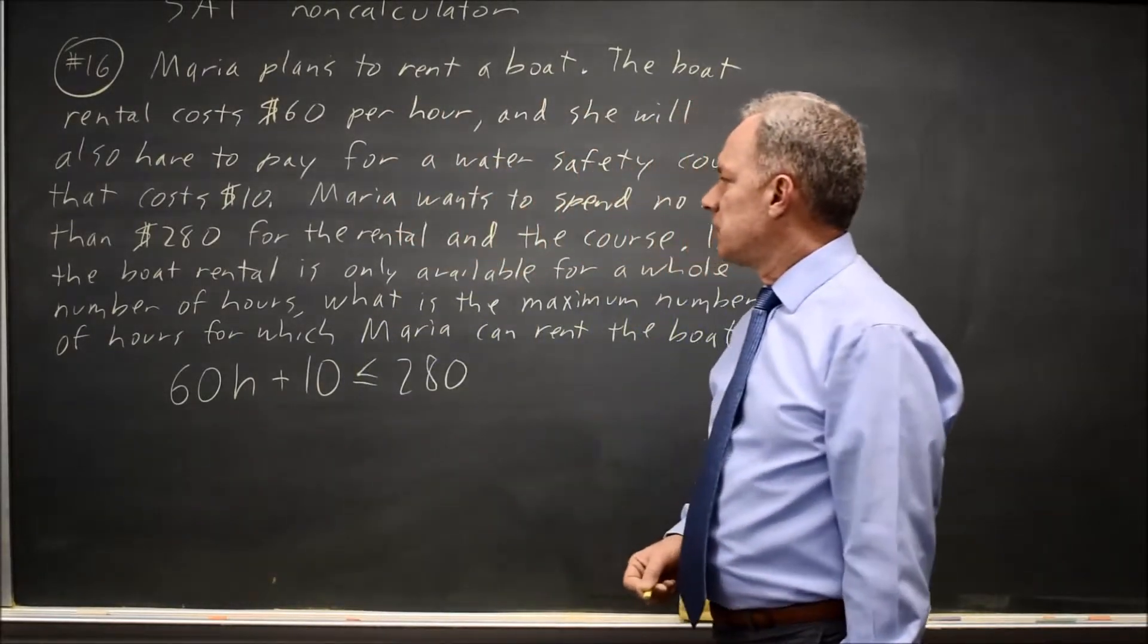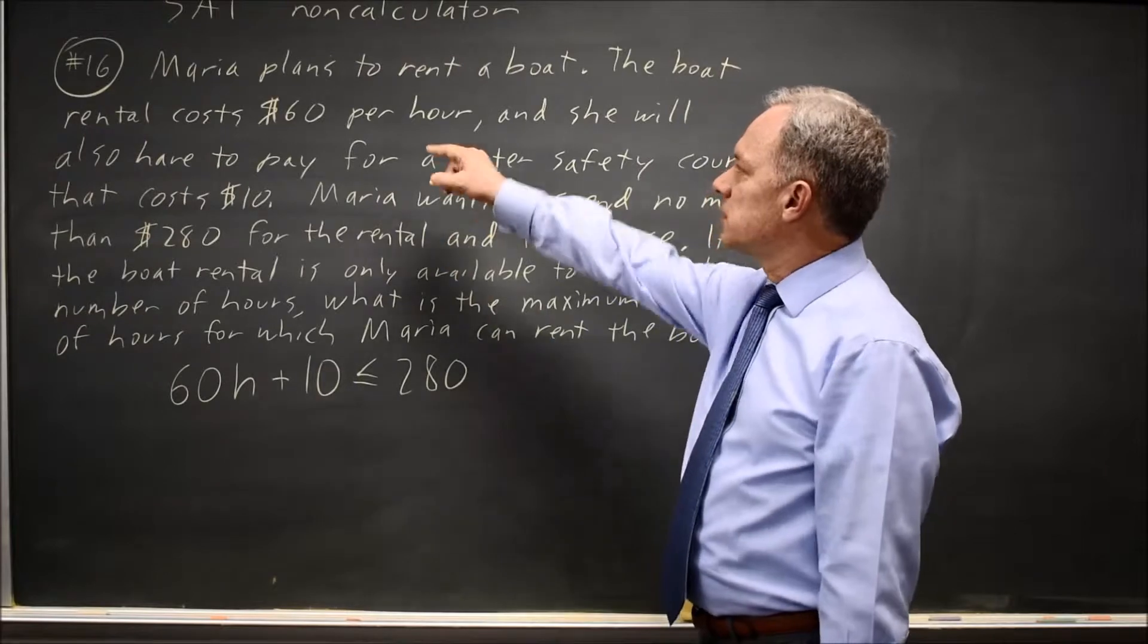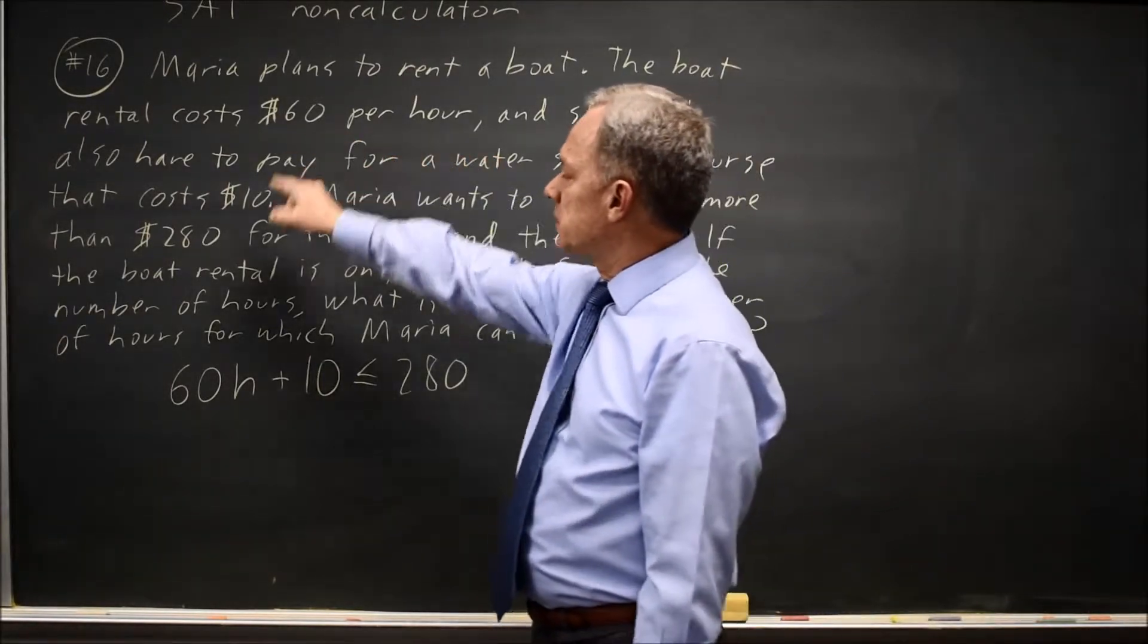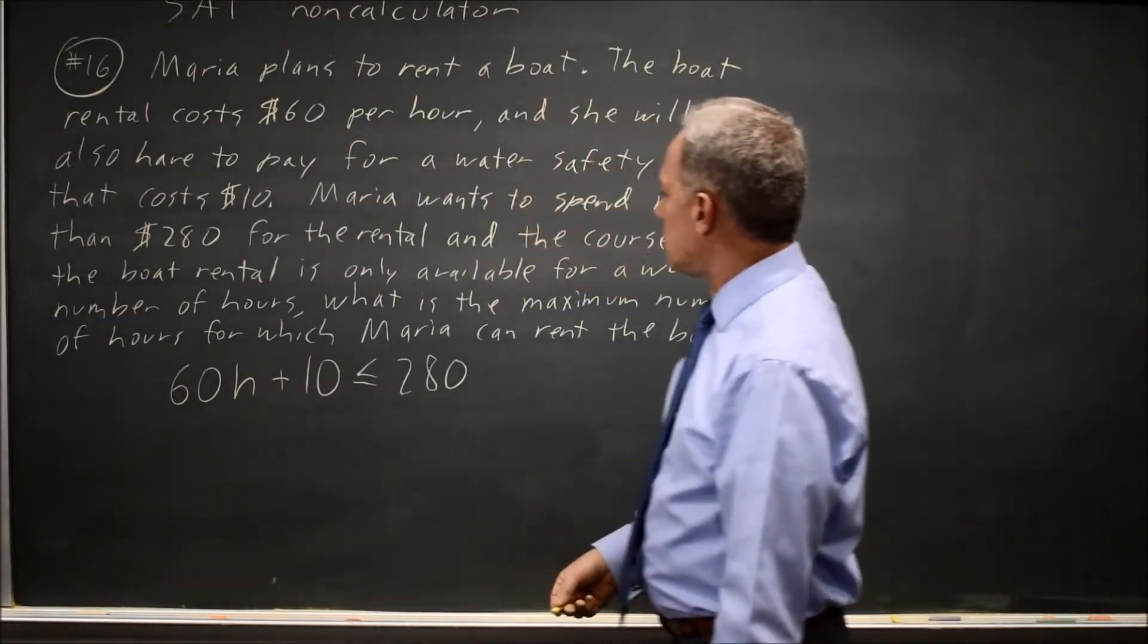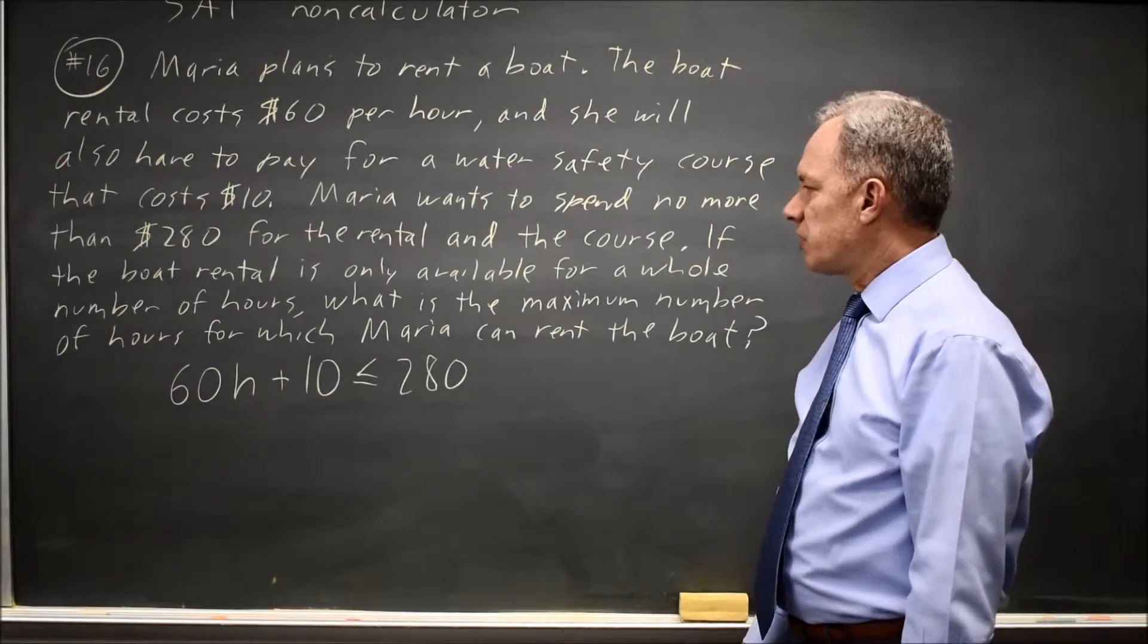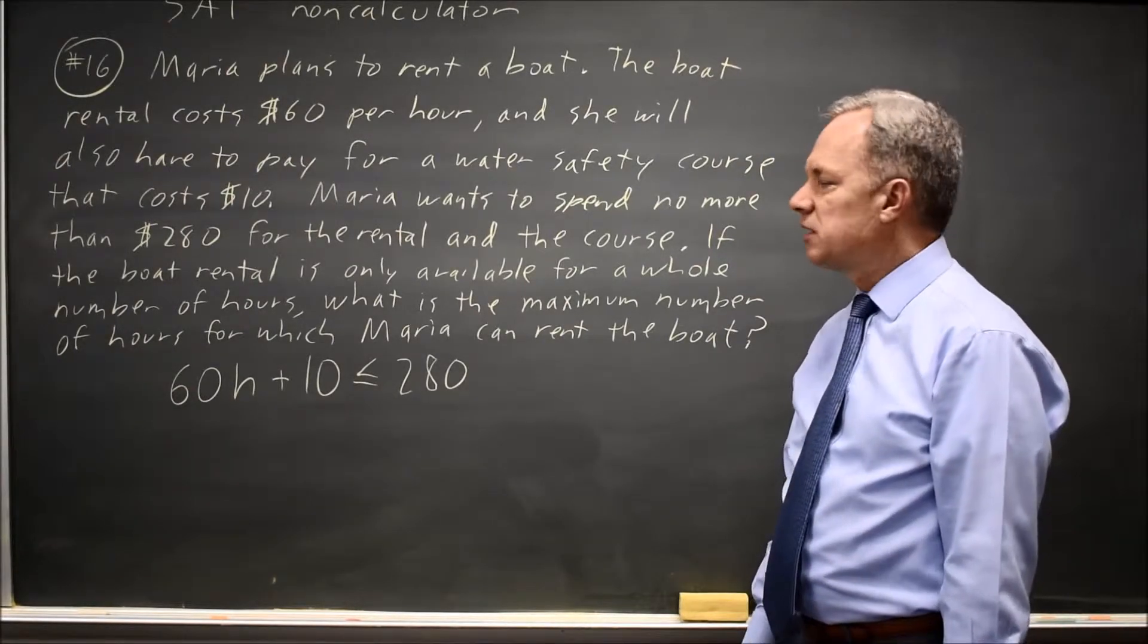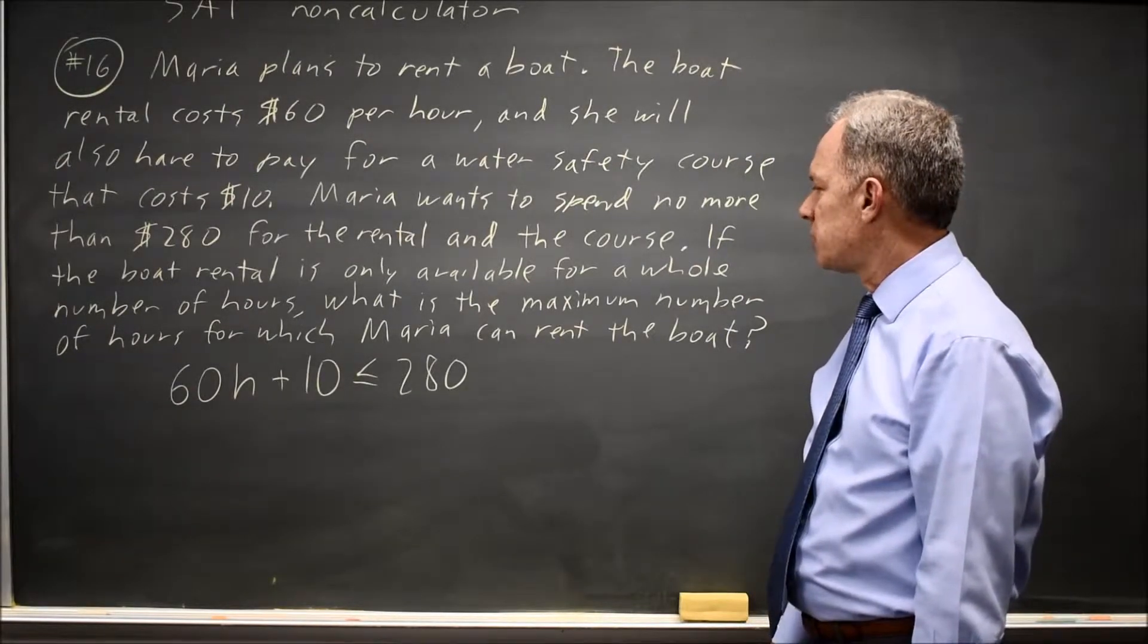So this is a linear inequality because $60 per hour is 60 times the number of hours. We're also told the rental is only available for a whole number of hours, so H will be a whole number, not a fraction or a decimal.